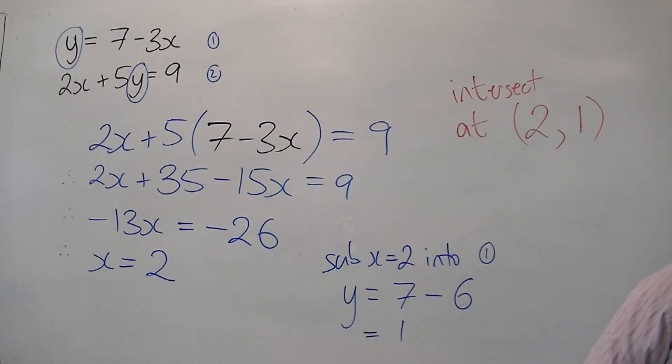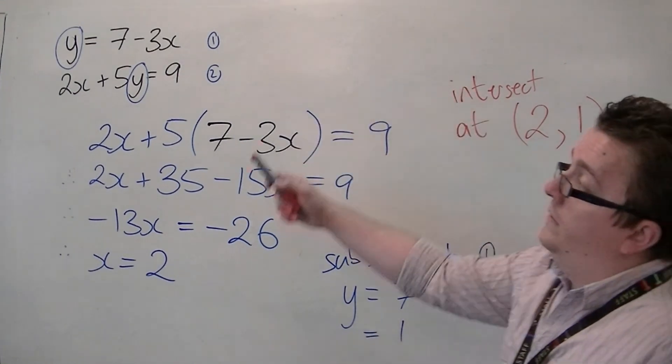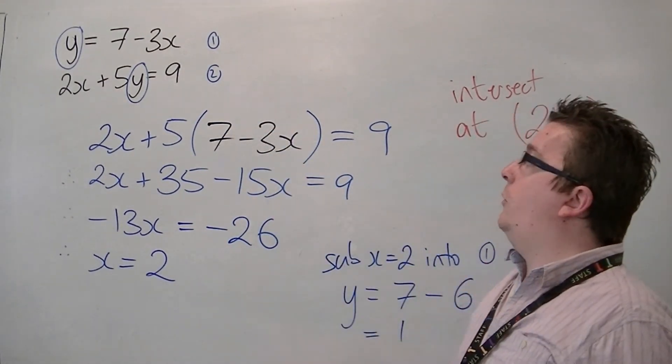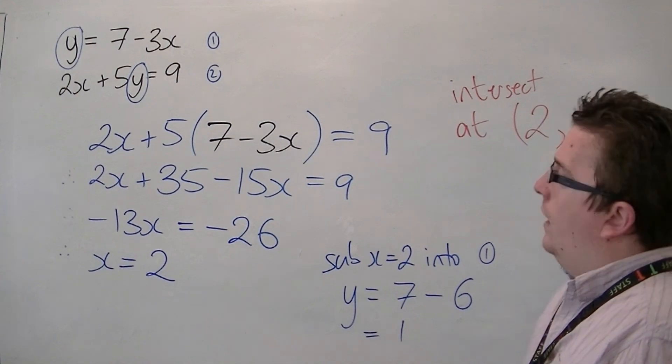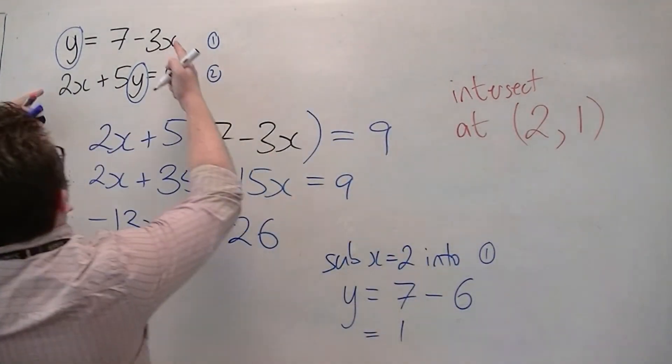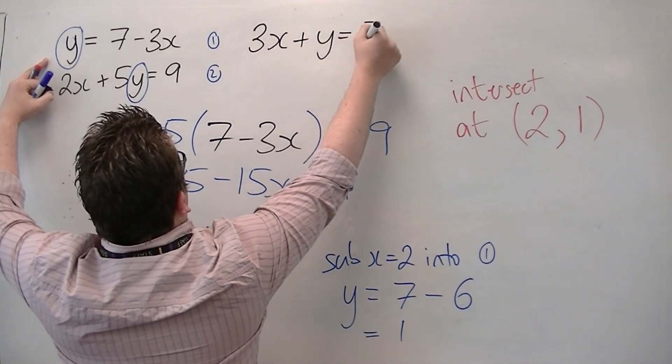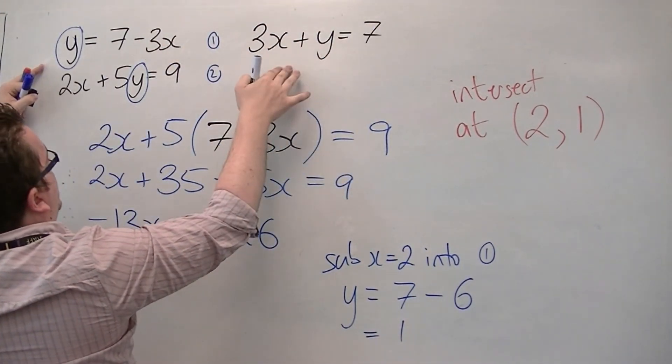So that's how you can go about it. And if you wanted to do this using the elimination method, you weren't too happy with doing it this way, what you could do is you could add 3x to both sides on the first equation, okay, so rearrange it to get you that.